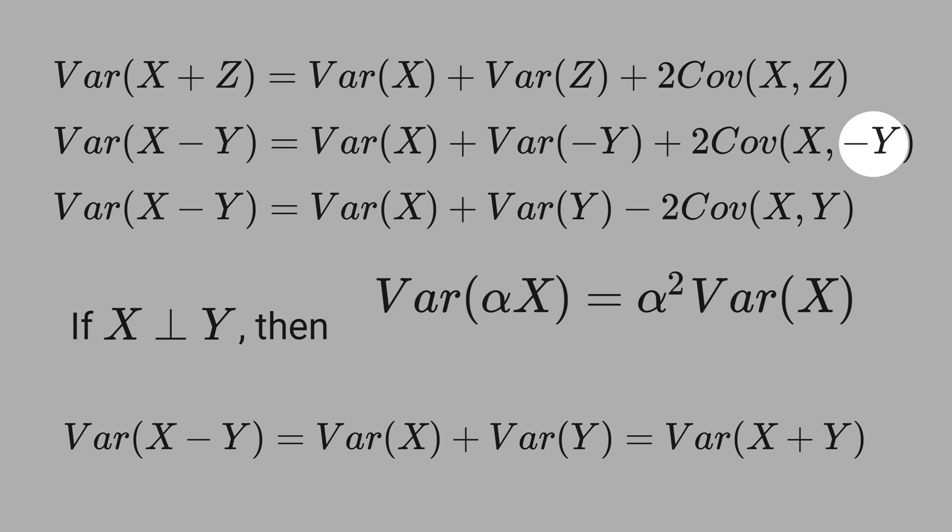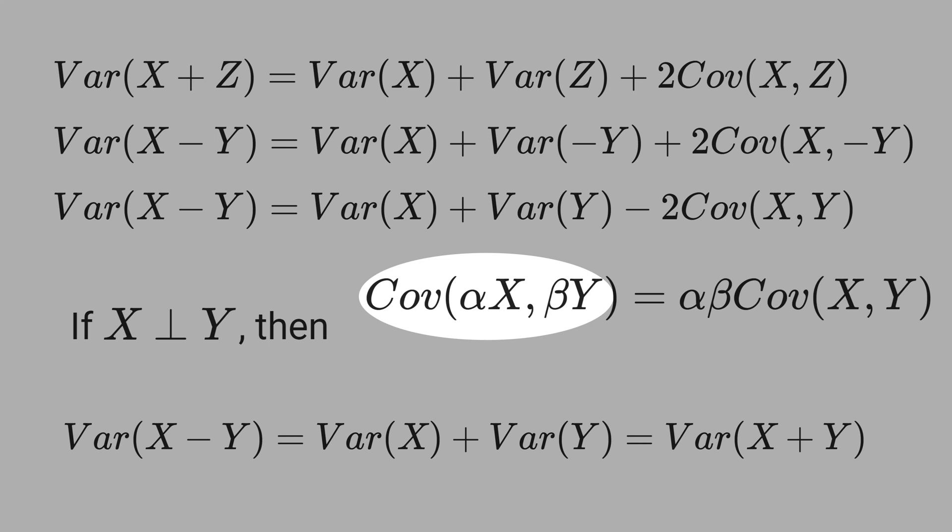In a similar way, this minus negative goes outside in the formula of covariance. In the formula of covariance, if you have scalars alpha and beta, both go outside. We just assume here alpha equals 1 and beta equals minus 1, and then you get this term here.